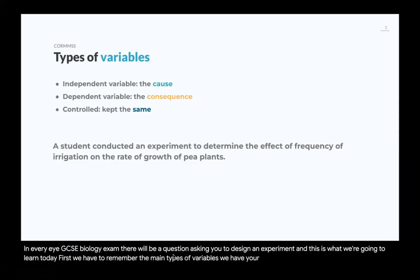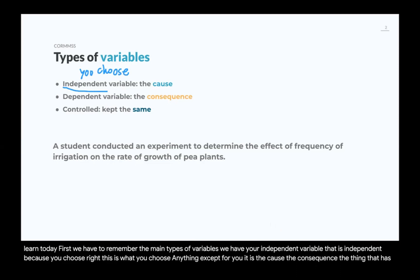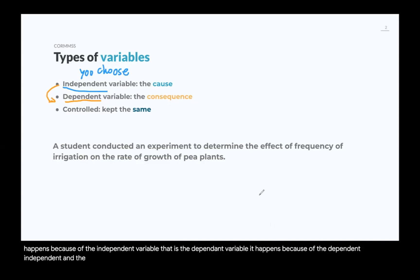We have the independent variable. That is independent because you choose — this is what you choose, it doesn't depend on anything except for you. It is the cause. The dependent variable is the consequence — the thing that happens because of the independent variable. And the controlled variables are the ones that have to be kept the same so that the experiment is valid.